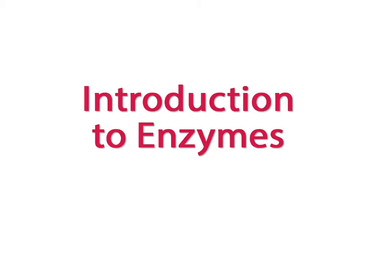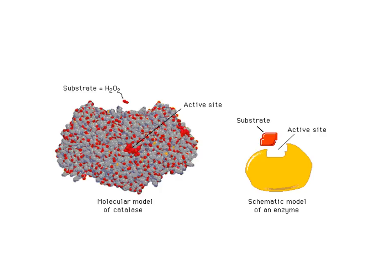Welcome to Unit 7 on Enzymes. By the end of this video, you will have an understanding of the characteristics of enzymes. A living system controls its activity through enzymes. An enzyme is a protein molecule that is a biological catalyst with three characteristics.